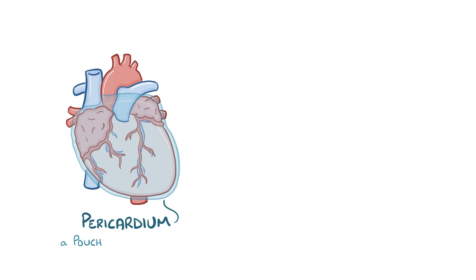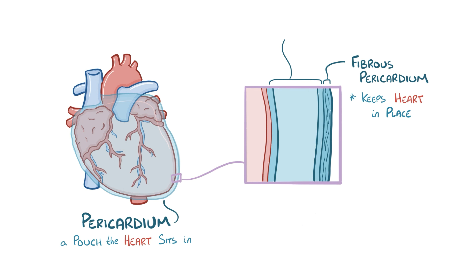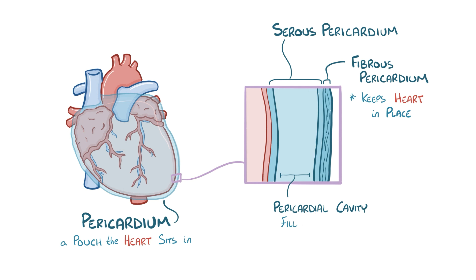The pericardium is a pouch or cavity that the heart sits inside of. The outer layer is the fibrous pericardium, which helps keep the heart in place within the chest cavity. The inner layer is the serous pericardium, which includes the pericardial cavity and is filled with a small amount of fluid — usually no more than 50 milliliters, about as much as a shot glass.